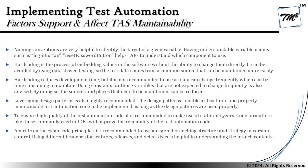The second important thing is hard coding, which is the process of embedding values in software without the ability to change them directly. It can be avoided by using data-driven testing so that test data comes from a common source that can be maintained more easily. Hard coding reduces development time but is not recommended since data can change frequently, making it time-consuming to maintain. Using constants for variables not expected to change frequently is advised, reducing the sources and places that need to be maintained.